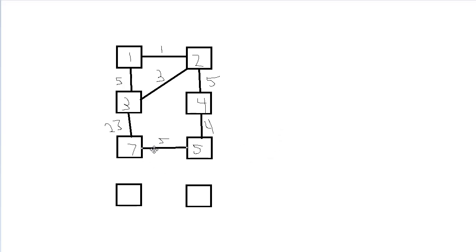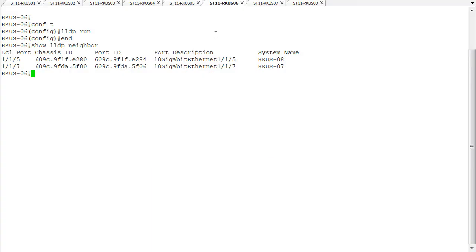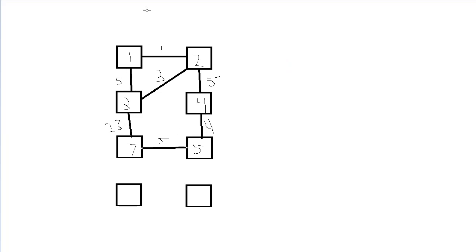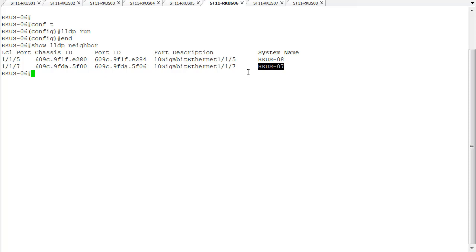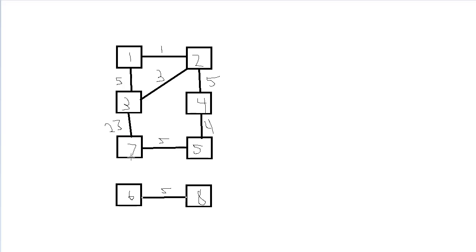There's a six and an eight in here somewhere, so let's go ahead and jump into six and do these in order. From switch six, which we don't know of any connections yet, we know port five of switch six connects to port five of switch eight. We also have another port connecting to switch seven on port seven — remote port seven, local port seven. That covers everything we know from switch six.